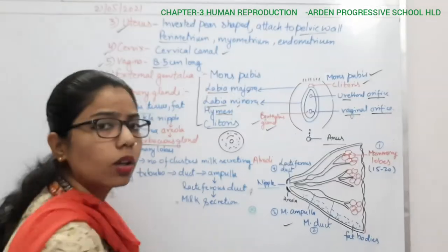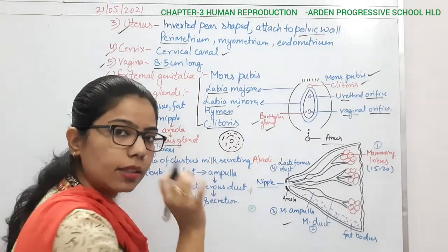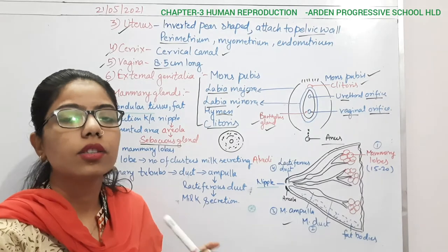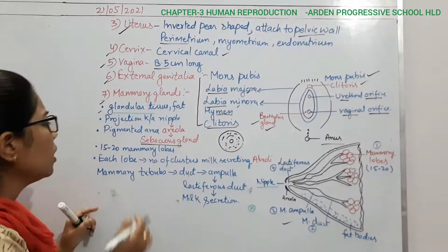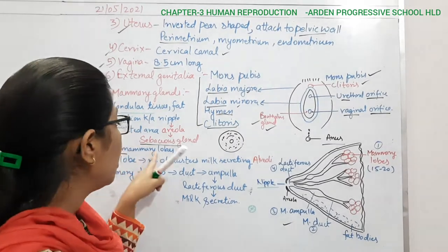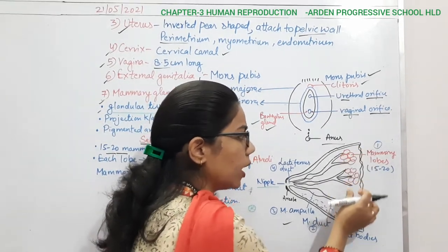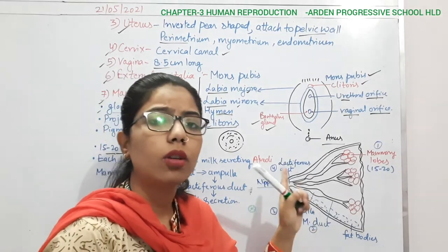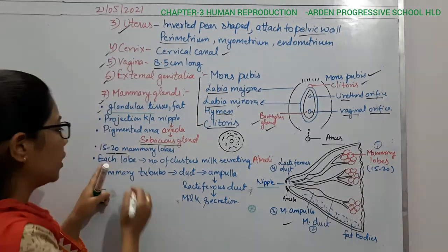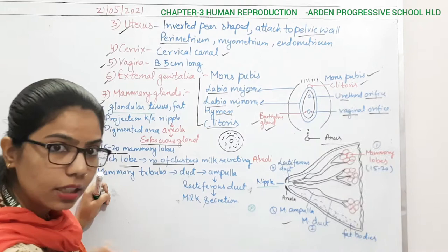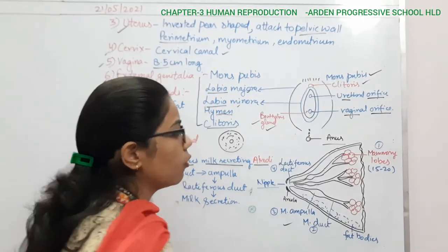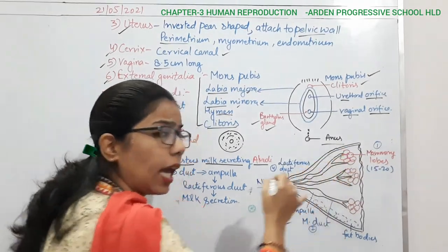The pigmented area around the nipple is called the areola. In this areolar part there are glands known as sebaceous glands or areolar glands — similar to sweat glands — and they secrete some milk. Internally the mammary gland has 15 to 20 mammary lobes. In each lobe there are a number of clusters responsible for secreting milk, and these clusters are called alveoli — similar to the alveoli in the respiratory system's bronchioles.